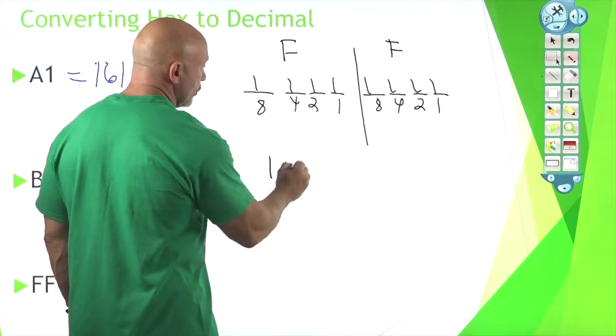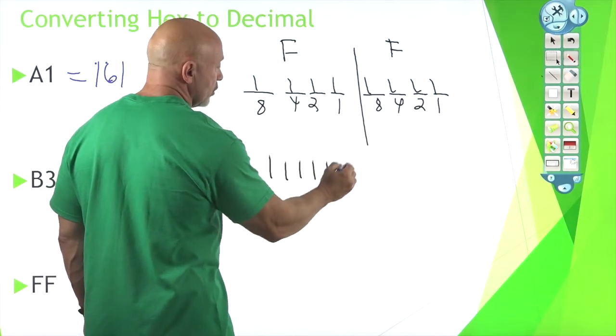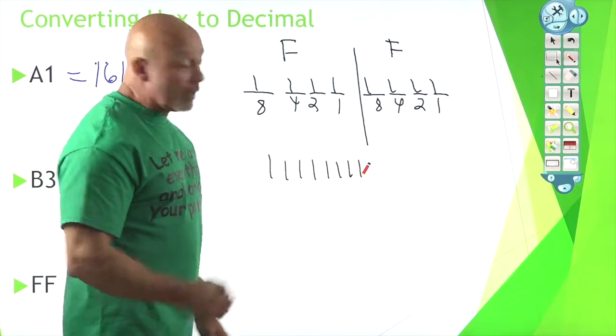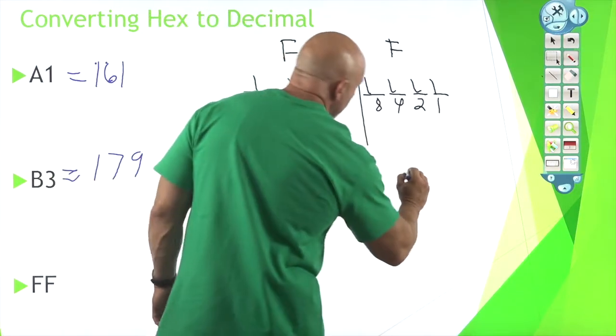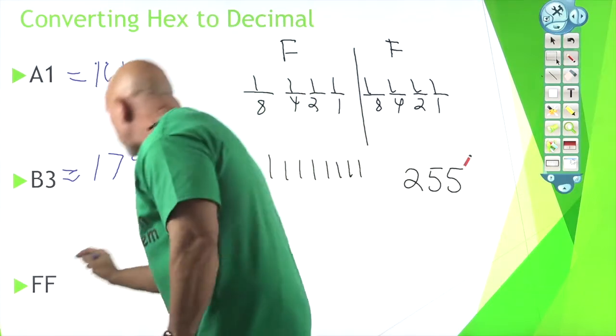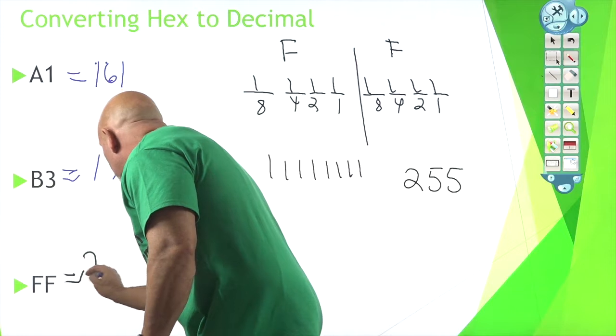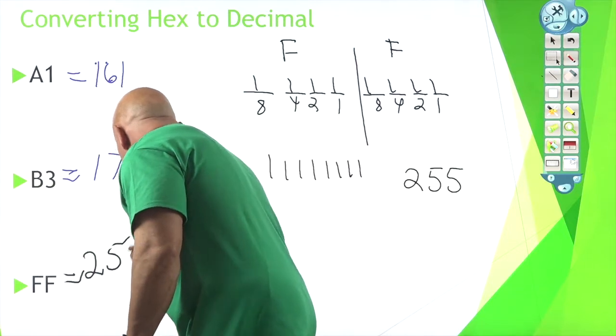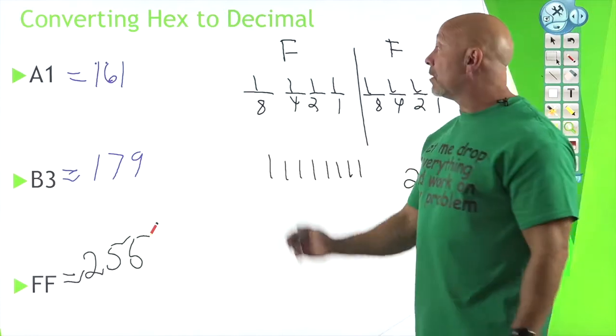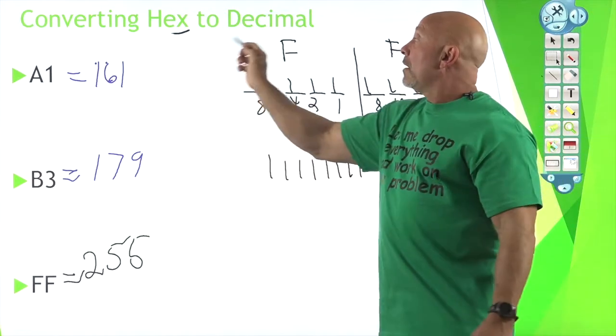So one, two, three, four, one, two, three, four. If you add all those bit values, what you're going to get is 255. So FF is 255.